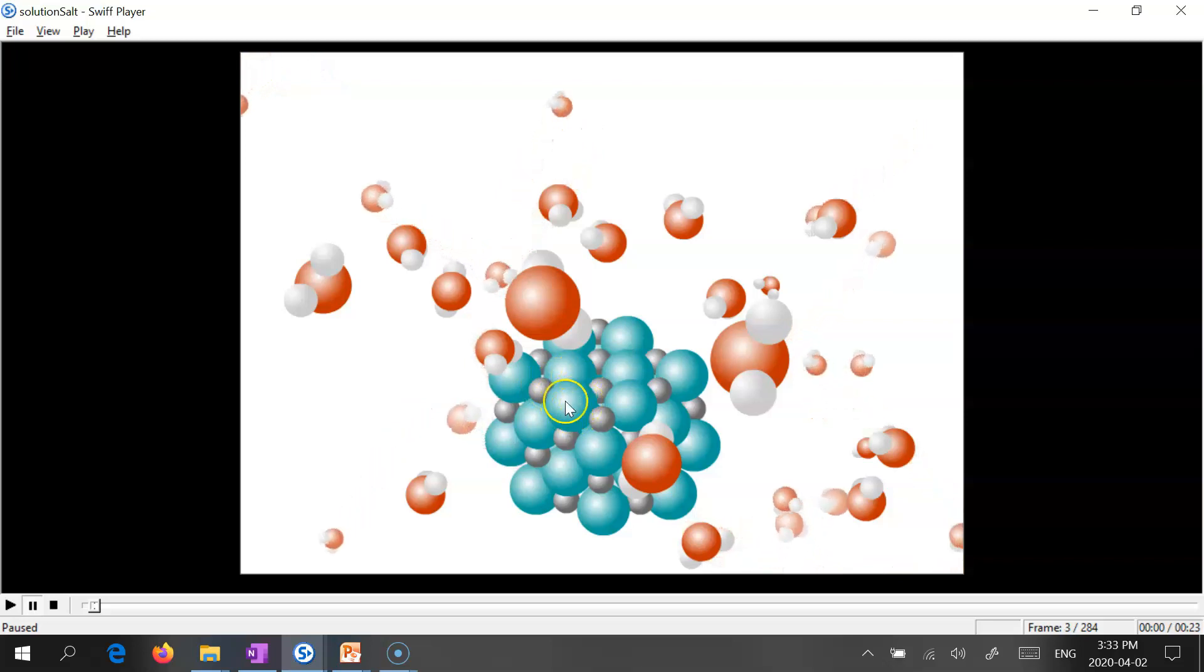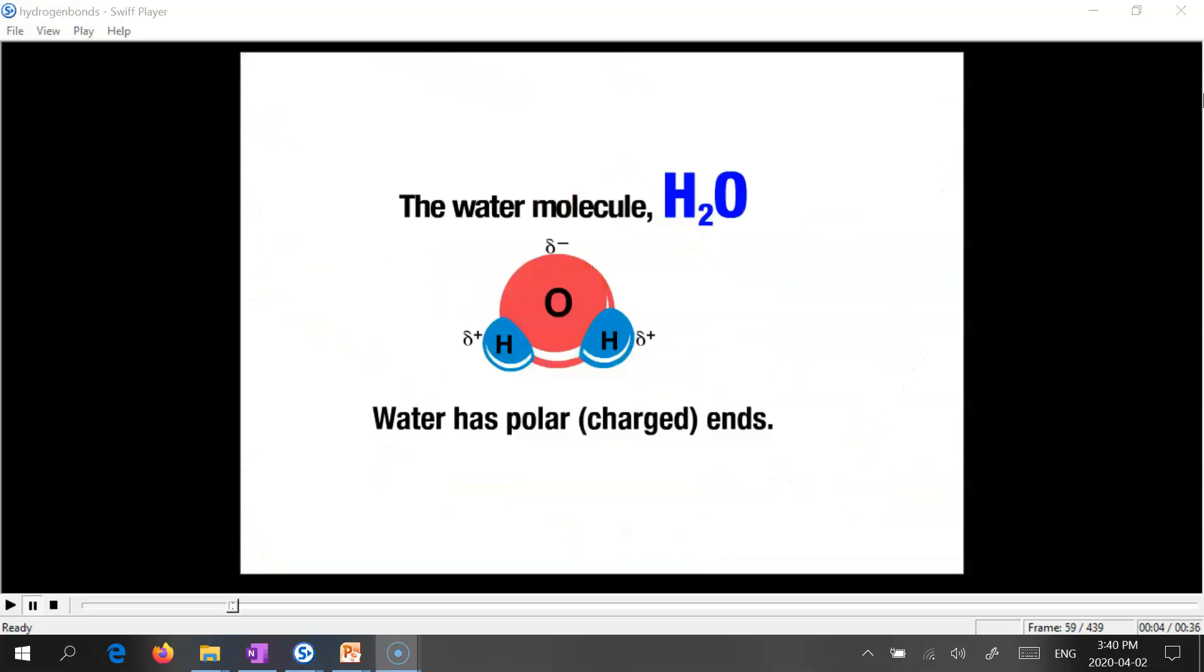This would be a chlorine anion, negative ion, and this would be a sodium cation, positive ion. Now, if you recall, water is a polar molecule, where one pole, or one end of the water molecule, is partially negatively charged, and the other pole is partially positively charged.